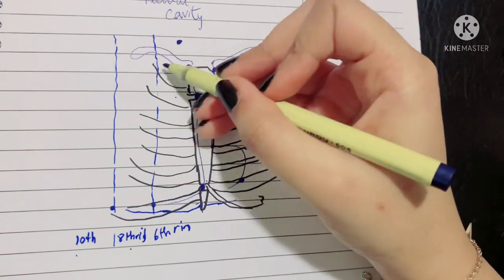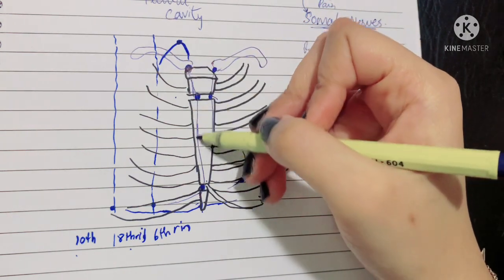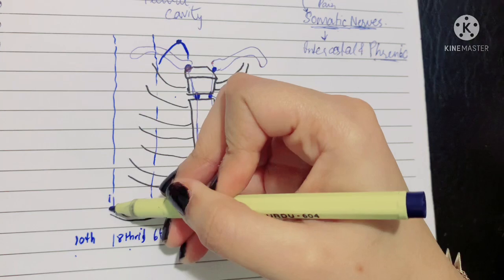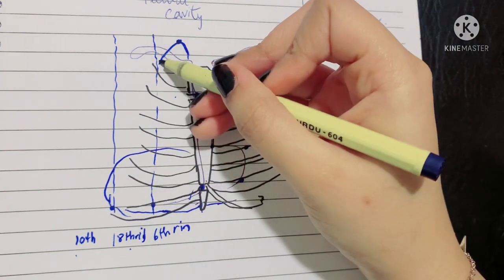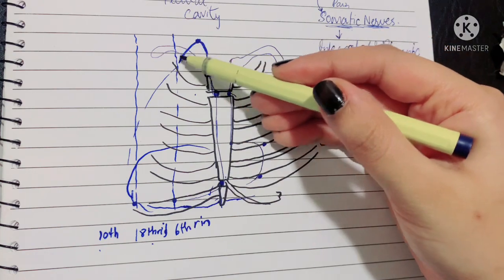That point is where the apices of the lungs go up to. So now you can actually trace what the lung looks like and just join these points and form lung. This way you can actually trace what your lung is going to look like.